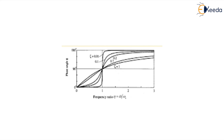Plotting phase angle φ against frequency ratio R (= ω/ω_n): when ω/ω_n = 0, phase angle is 0°; when ω/ω_n = 1, phase angle is 90° (π/2); when R is between 0 and 1, phase angle is between 0° and 90°; and when R exceeds 1, phase angle increases from 90° to 180°. For small damping (ζ < 0.1), the phase angle varies rapidly for small changes in frequency ratio.